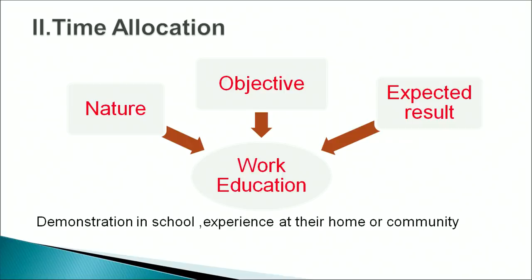Now the second point is time allocation. Time allocation refers to how much time should be given to each activity under work education. It depends on three things: the nature of the activity, the objective of the activity, and the expected result of the activity. Sometimes activities are demonstrated in school and students carry out the experience at home or in the community.